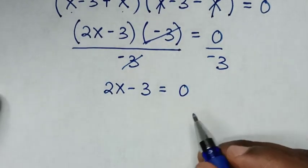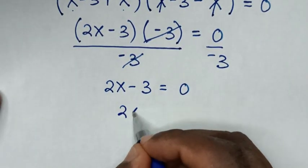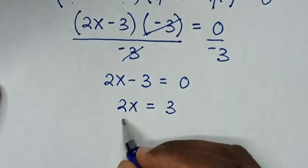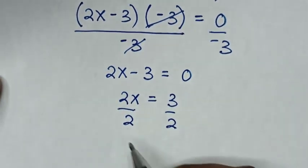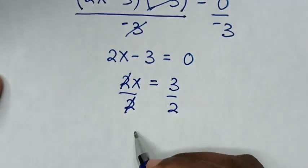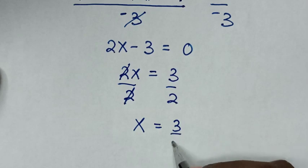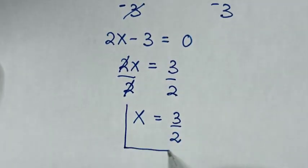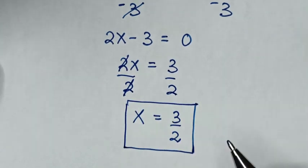In the next step, we take negative 3 to the other side, so 2x is equal to 3. Then we divide both sides by 2, so 2 and 2 cancel, giving x is equal to 3 over 2. Therefore, this is the final answer for the value of x in this problem.